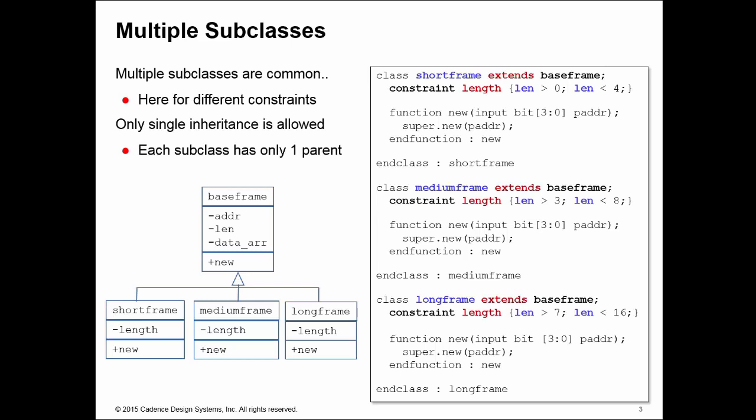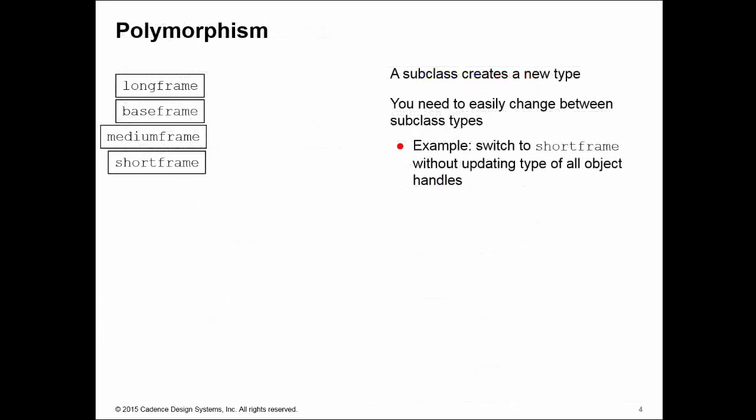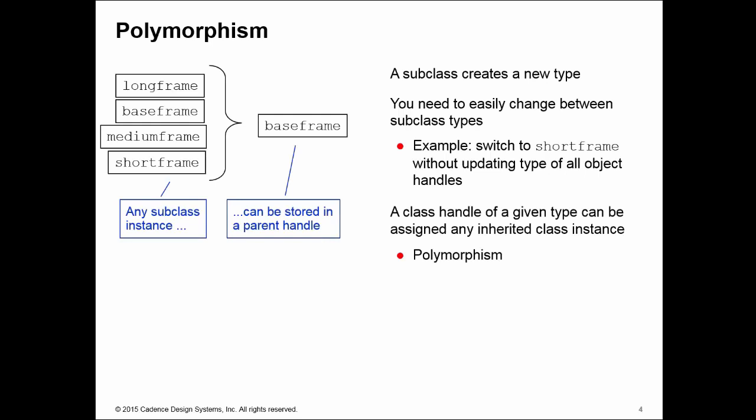Each subclass can only extend from one parent. The problem is that each subclass creates a new type, and we want to quickly and easily change between these subclass types without rewriting the test bench. If the test bench is written using base frame handles, we want to be able to switch to short frame instances without changing handle types throughout the whole test bench. Object orientation has a solution to this called polymorphism.